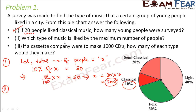Let us now look at the second part: which type of music is liked by the maximum number of people? Looking at this pie chart, which portion is the biggest? Just looking at the different colors, you can tell that this portion is the biggest. That means light music is liked by 40% of the people, which is the maximum number. So light music is liked by the maximum number of people.